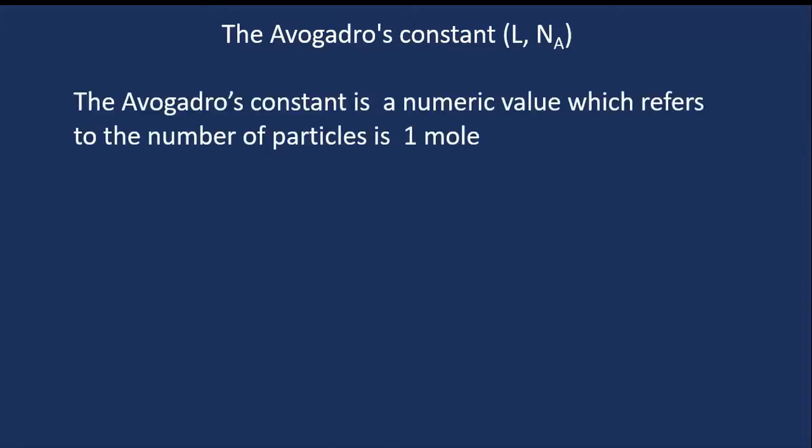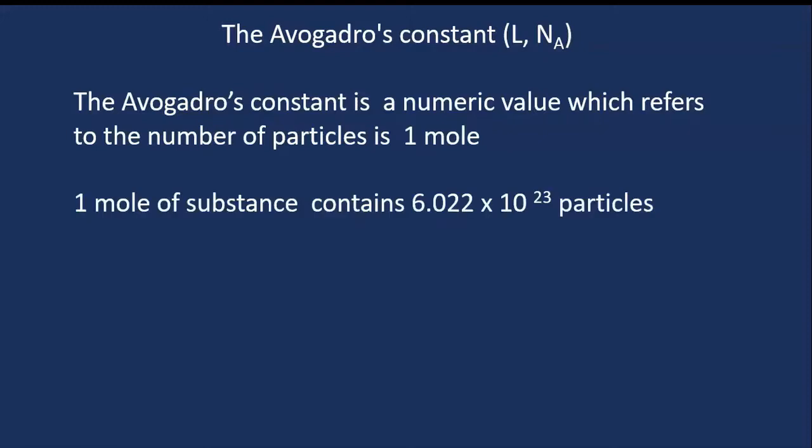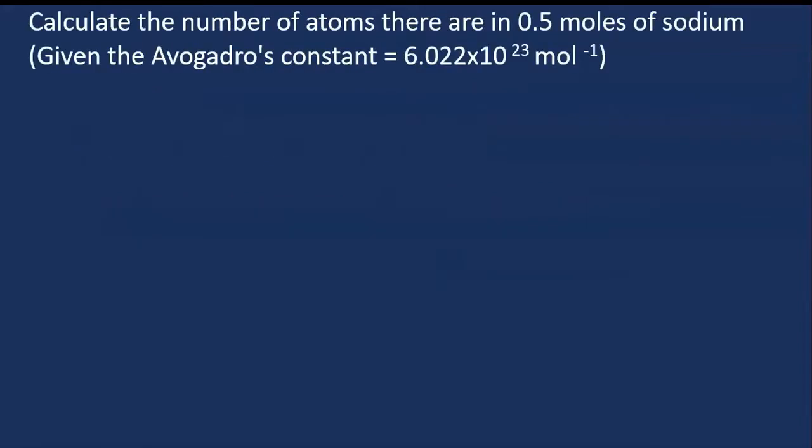The Avogadro's constant. In chemistry, the symbols L and N with A as a subscript are used to refer to the constant. The Avogadro's constant is a numerical value which refers to the number of particles in one mole. In general, one mole of substance contains 6.022 times 10 to the power 23 particles.